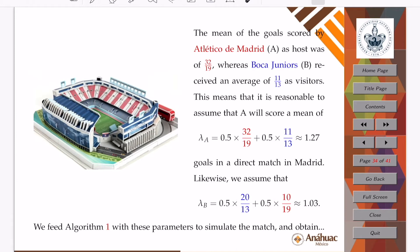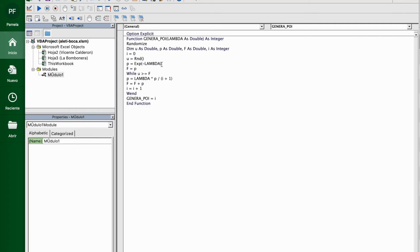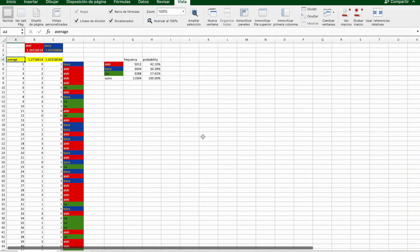We can do an analogous thing for Boca by seeing that this is the mean of the goals scored by Boca away, and this is the mean of the goals received by Atleti when they are at home. If we feed with these parameters algorithm one, then we see again our code. Here we see that number which we were talking about before, for Atleti and for Boca.